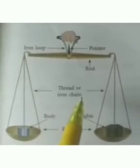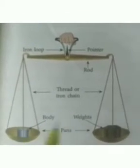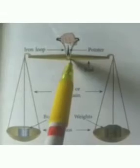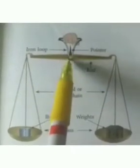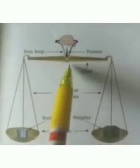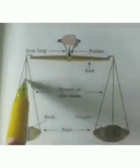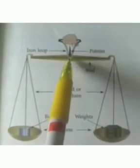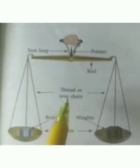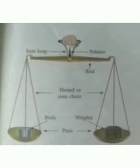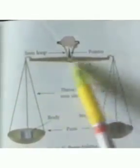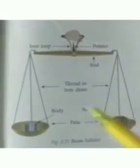See, this is a simple form of a commonly used beam balance. It consists of a horizontal beam of iron supported at the center by an iron loop. Two similar pans are suspended equal distances from the center of the beam by means of strings or iron chains of equal lengths. A vertical pointer is fixed at the center of the iron loop. You must have noticed shopkeepers weigh goods using this balance. A beam balance is said to be true if its beam remains horizontal and the pointer vertical when its pans are empty or equal weights are placed on them.